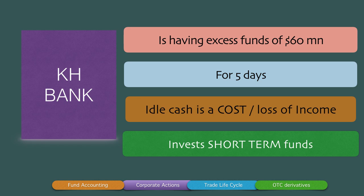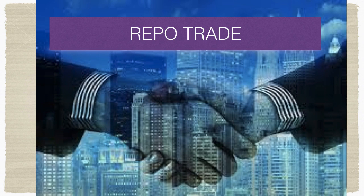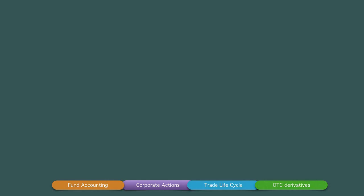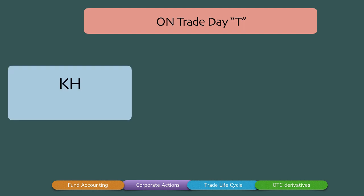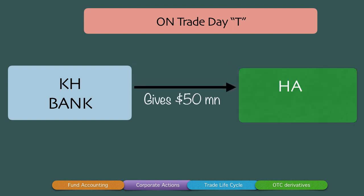So here you have Hurry Bank and KH Bank — one needs the capital and one has the capital. They meet in the money markets through primary market dealers to do an OTC trade on the repo market. On trade date T, KH Bank lends $50 million to Hurry Bank.